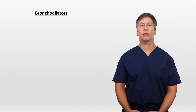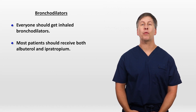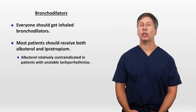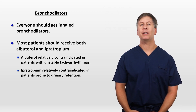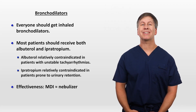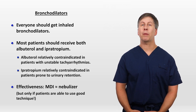Now I'll move on to discuss the specific treatments: bronchodilators, steroids, antibiotics, oxygen, and BiPAP — starting with bronchodilators. Everyone diagnosed with a COPD exacerbation should get them. Most patients should receive both albuterol and ipratropium. The uncommon exceptions are that albuterol is relatively contraindicated in patients with unstable tachyarrhythmias, and ipratropium is relatively contraindicated in patients prone to urinary retention. The effectiveness of metered-dose inhalers and nebulizers is essentially the same, but only if patients are able to use good technique, which most older patients in respiratory distress cannot. So it's typical to start everyone with nebulizers, but once a patient has improved, it is usually okay to switch them to an inhaler.